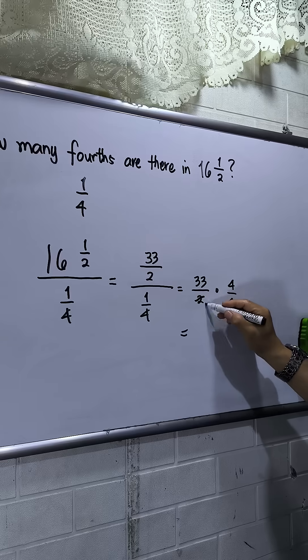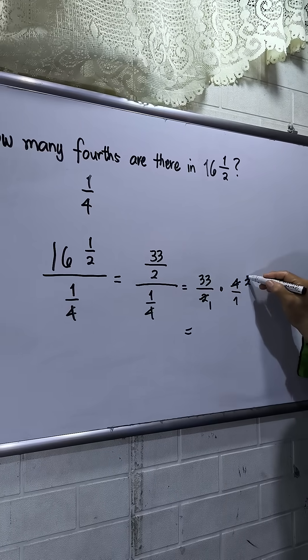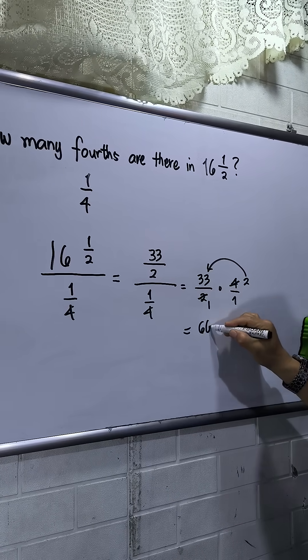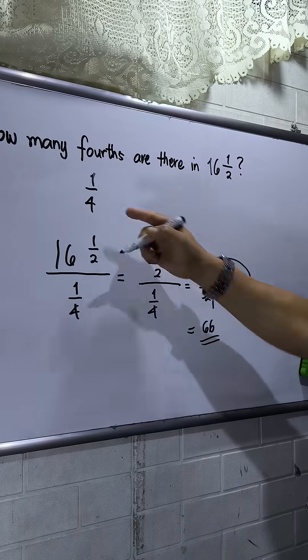So divide by 2, that is 1. Divide by 2, that is 2. And then multiply. So there are 66 fourths in 16 and a half.